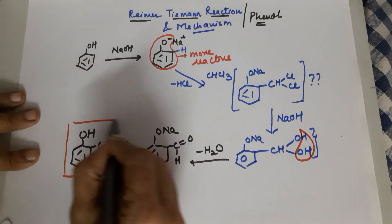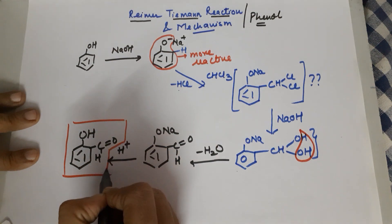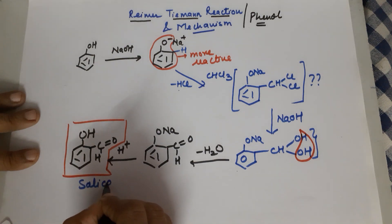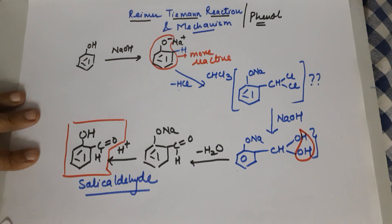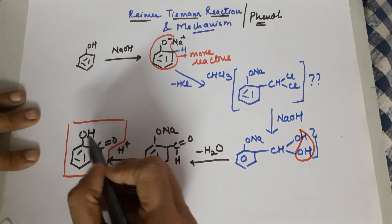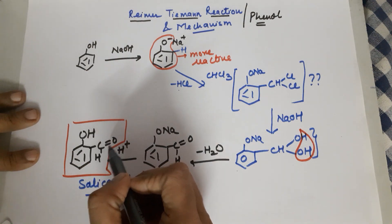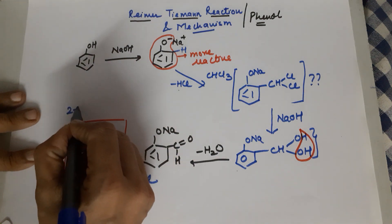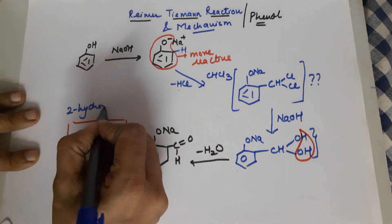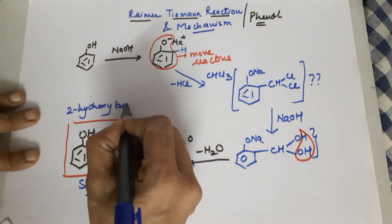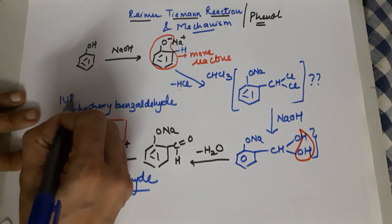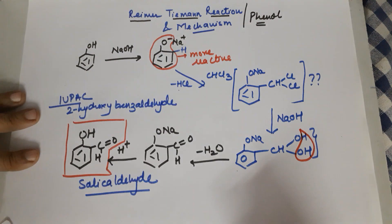Focus on this product. This product is nothing but salicylaldehyde, that is the common name. The IUPAC name for this compound would be, which out of the two is the major functional group? Aldehyde. So this is a benzaldehyde and this is 2-hydroxy. So the name is 2-hydroxybenzaldehyde is the IUPAC name of the final product.